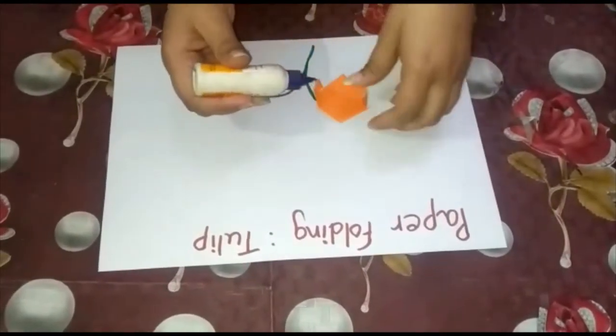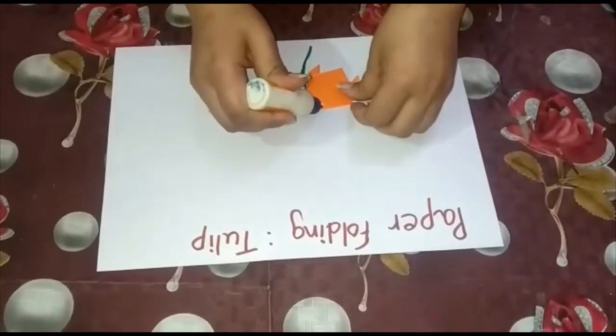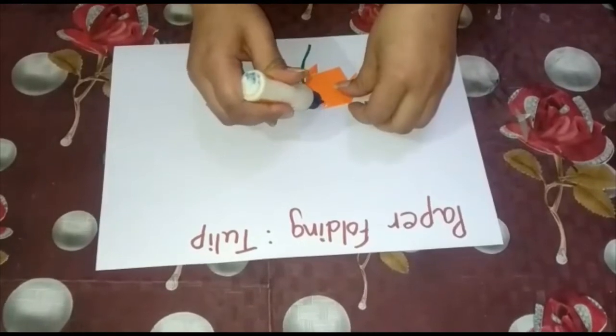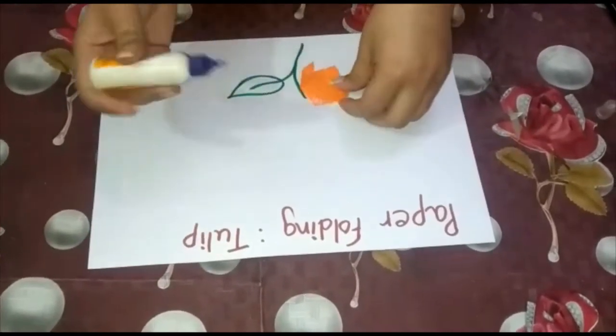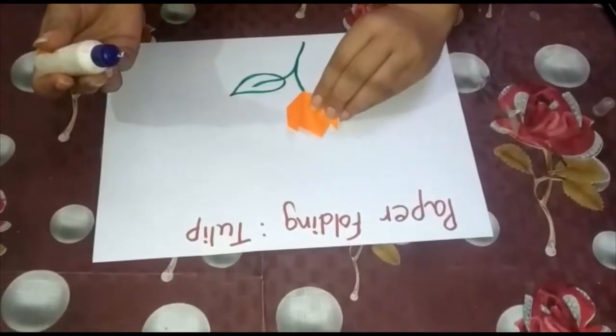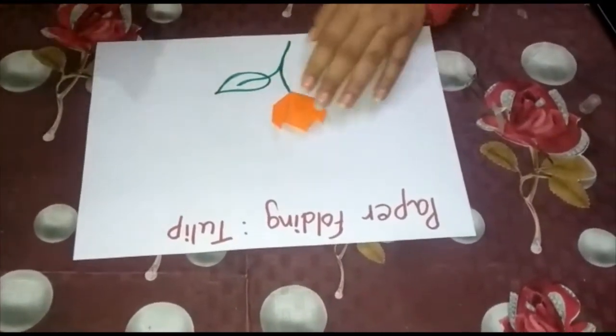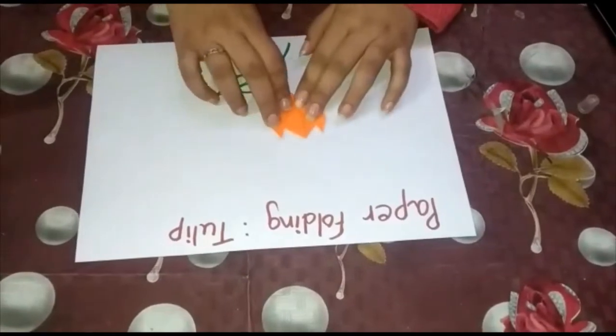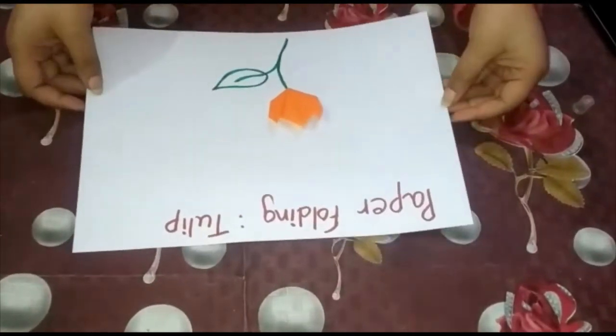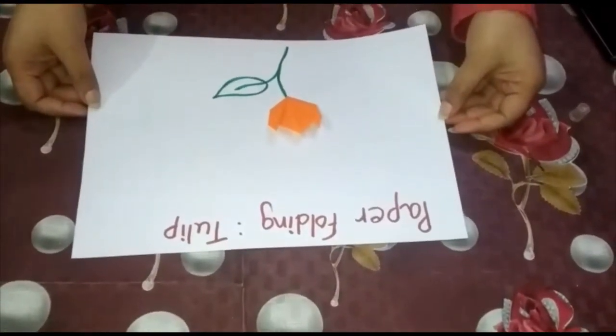Just apply fevicol at the tip and paste. This is your paper folding tulip. Thank you.